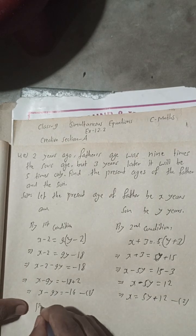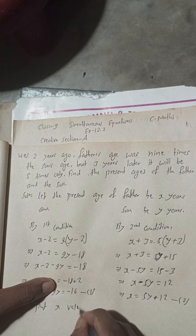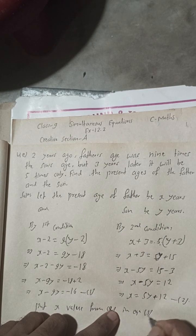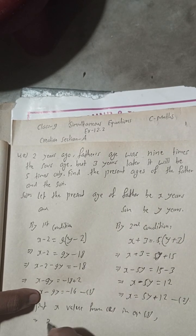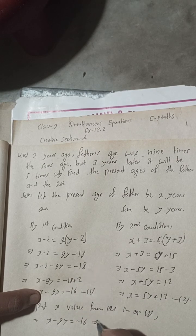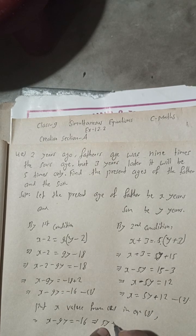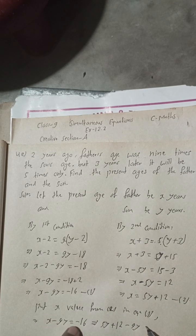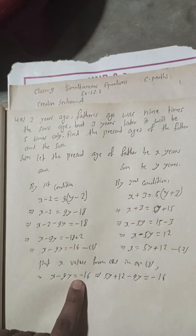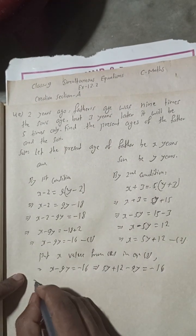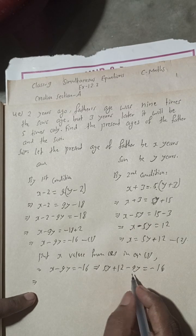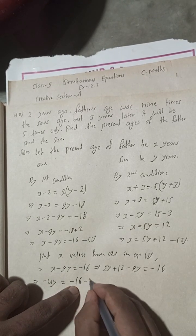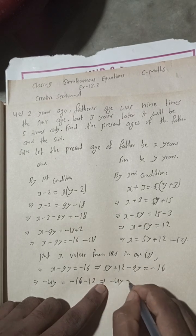Now substitute the x value from equation two into equation one. So: x minus nine y equals minus 16 becomes (five y plus 12) minus nine y equals minus 16. This simplifies to five y minus nine y equals minus 16 minus 12, giving minus four y equals minus 16 minus 12.